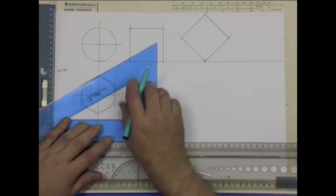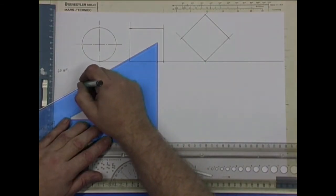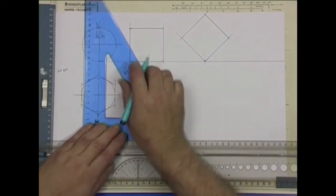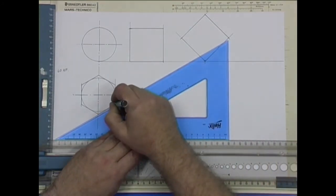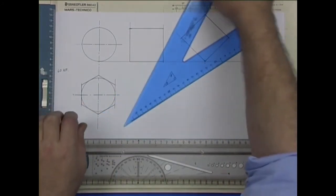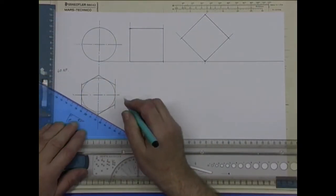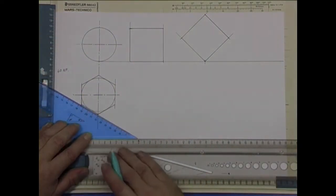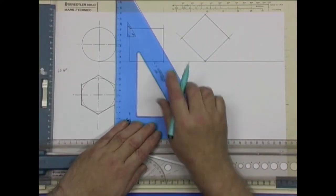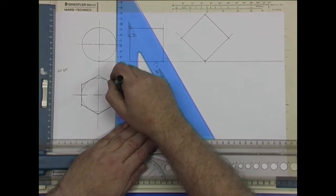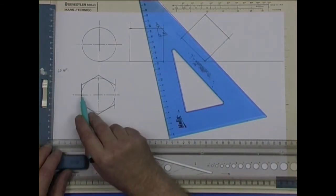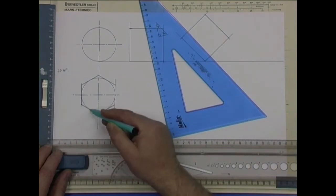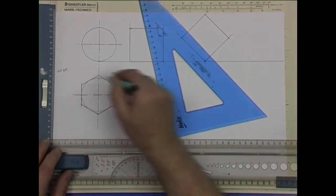Which we'll just line in. We're always keeping the set square on the T square. And there we have a hexagon which measures 60 millimeters across the flats. That way, that way, and that way. It's a regular hexagon.